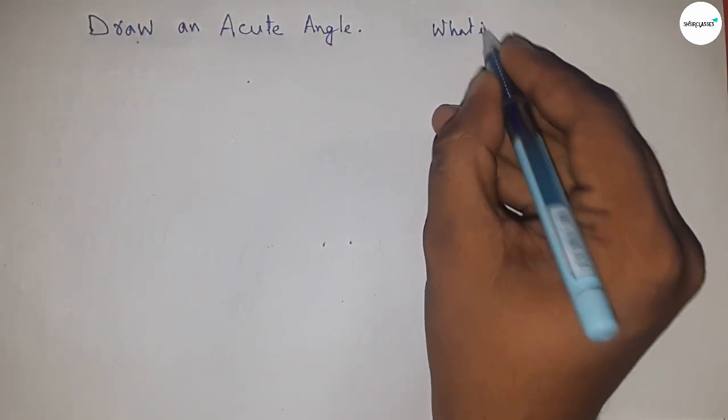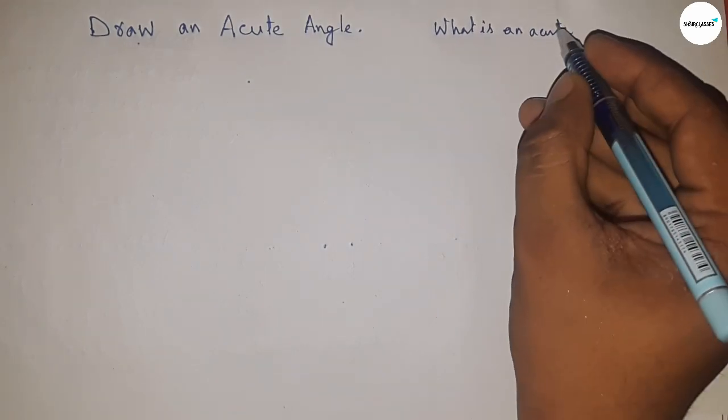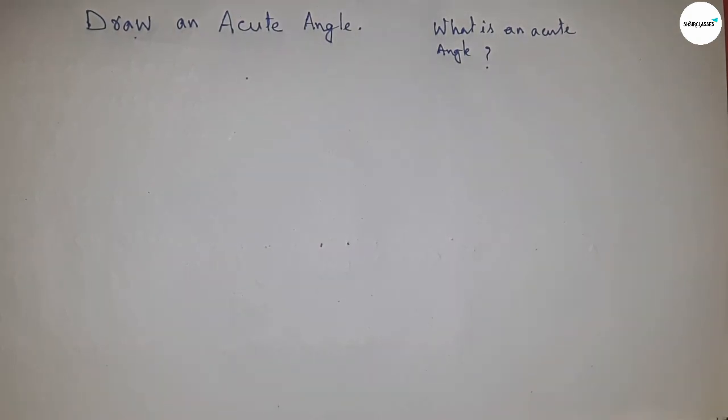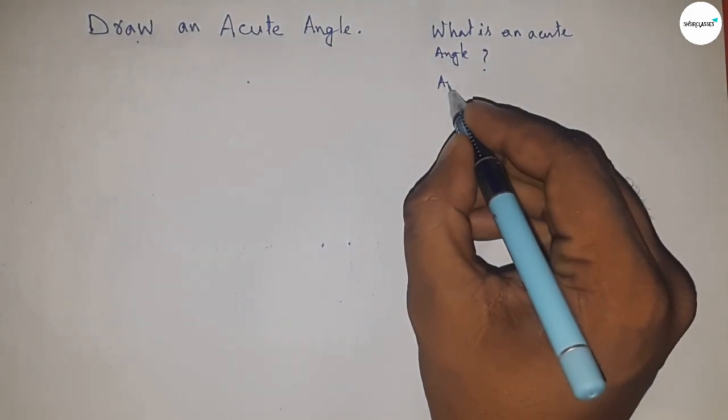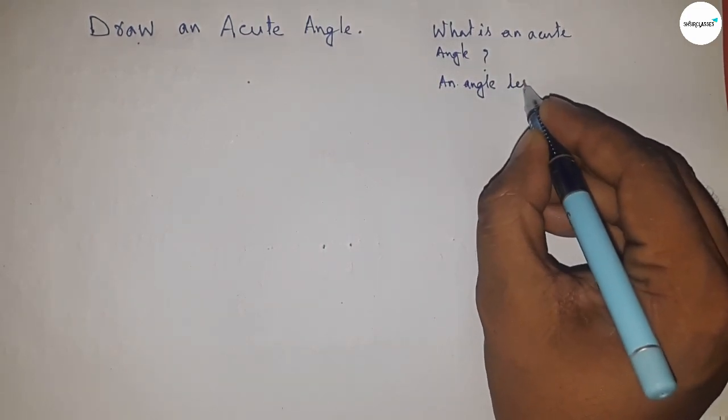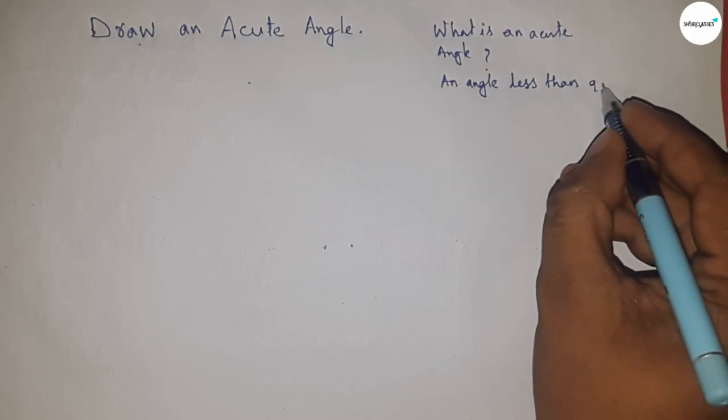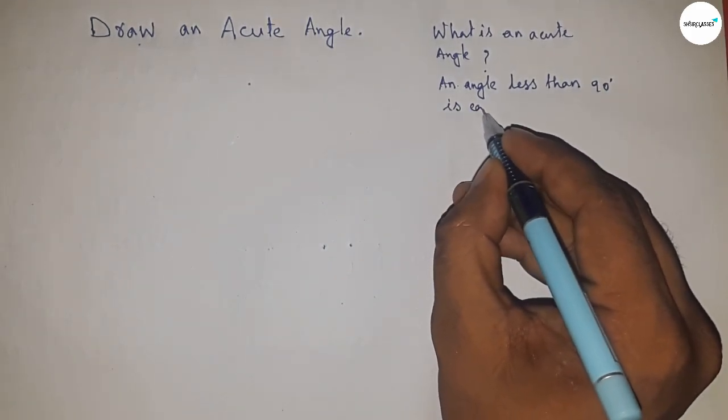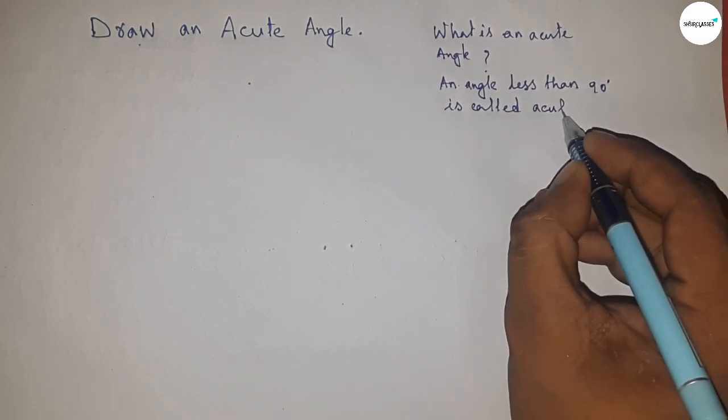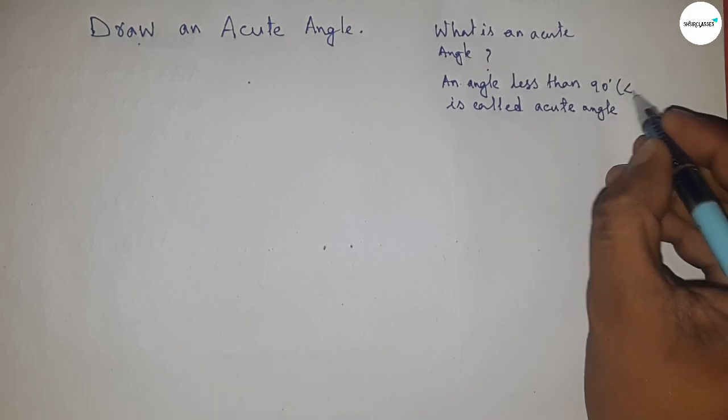First of all, let's build a concept about acute angles. What is an acute angle? An angle less than 90 degrees is called an acute angle. That means if there is an angle whose value is suppose 30, 40, 50, all are less than 90.